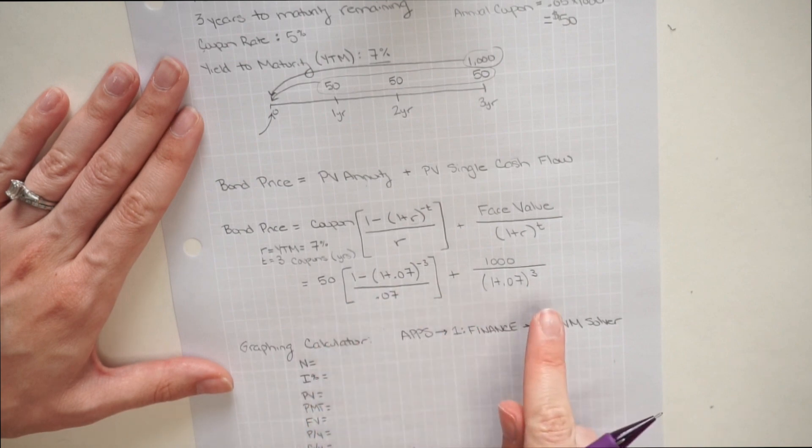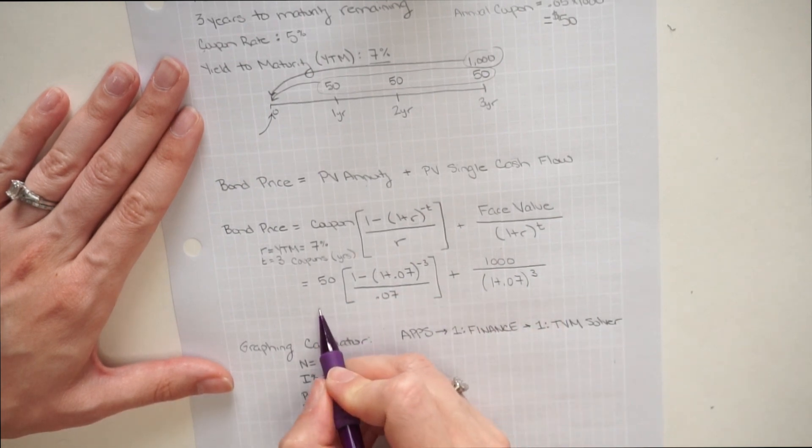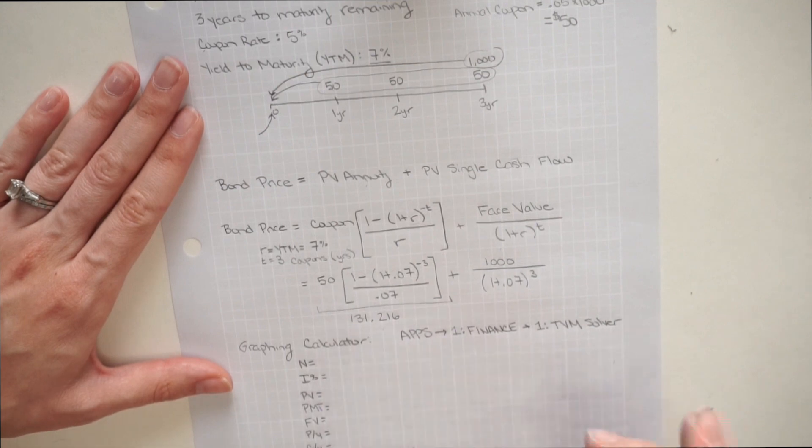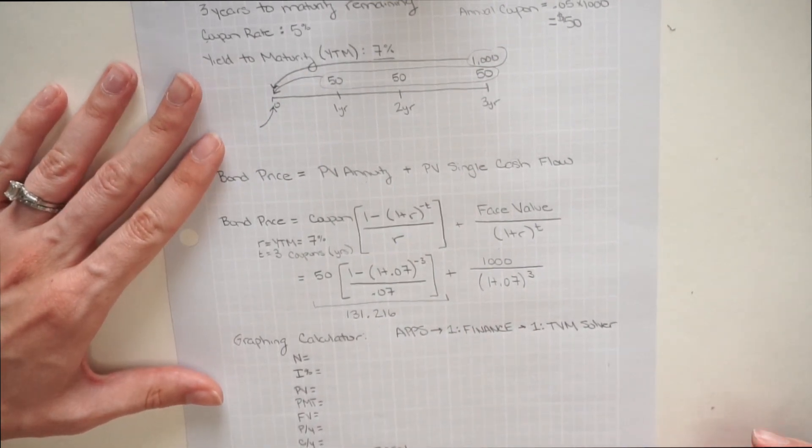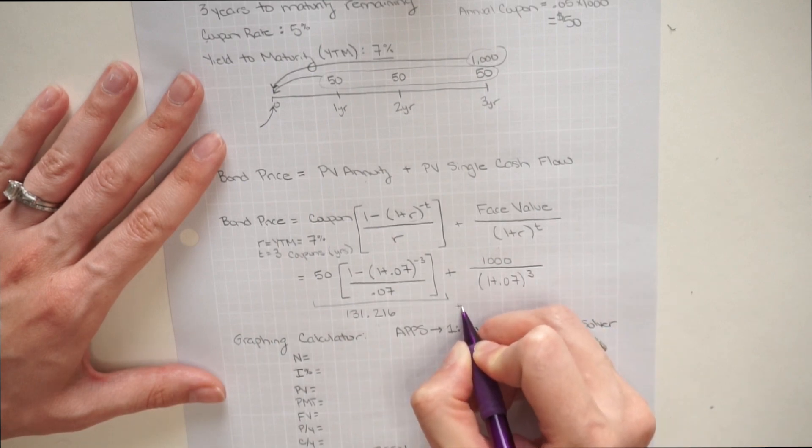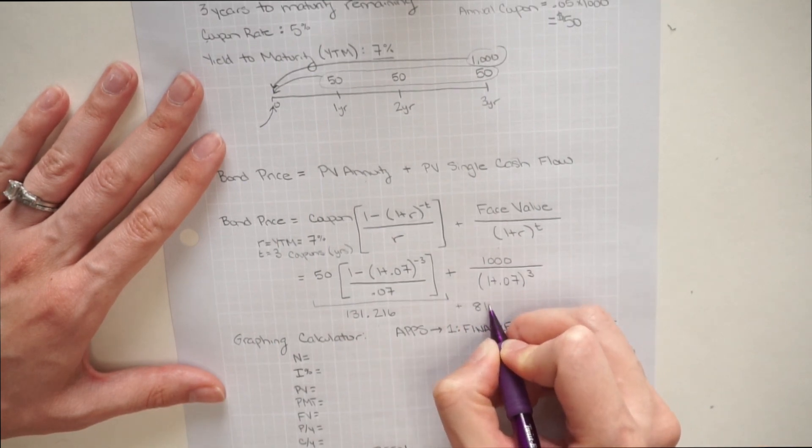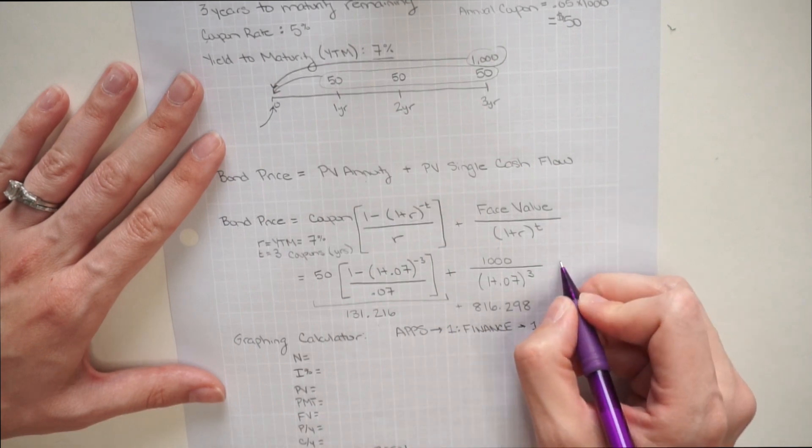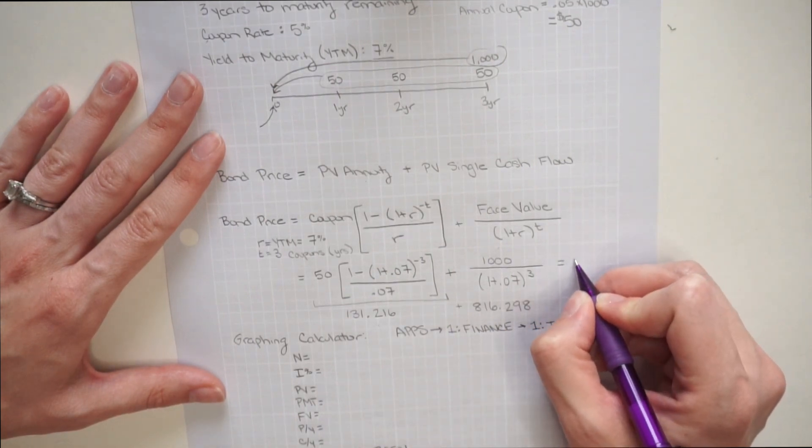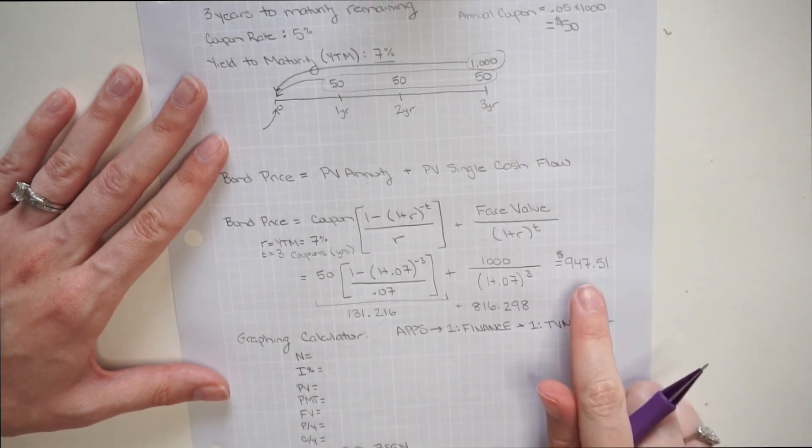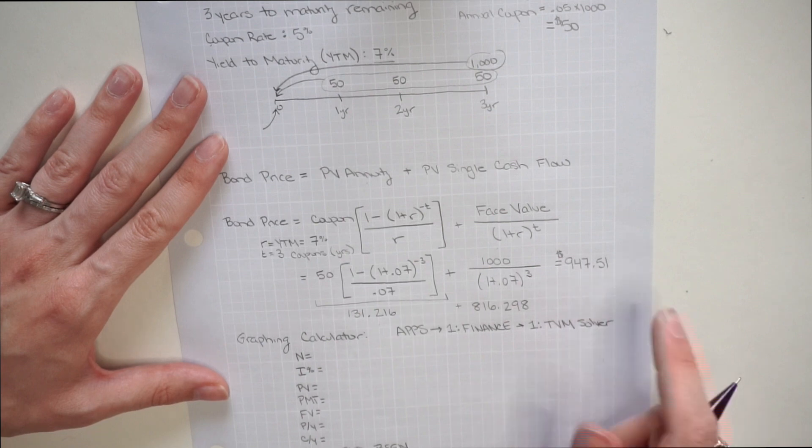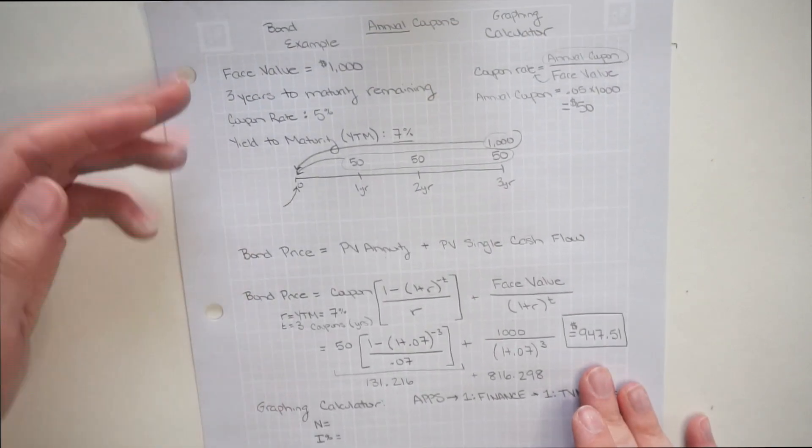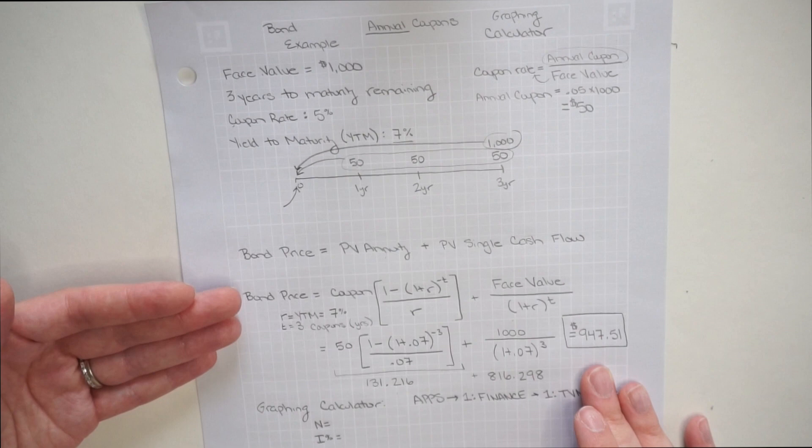So now I'm going to solve each one of these. And what I end up with is for this first term here, I get $131, and I'm just keeping three decimal places there, so it makes it easier to round my final answer. Then for my second term, I end up with around $816 and about 30 cents. So adding those two up, I end up with a bond price or a bond value of $947.51. So that would be the bond price that we calculated based off of these inputs using our time value of money equations.